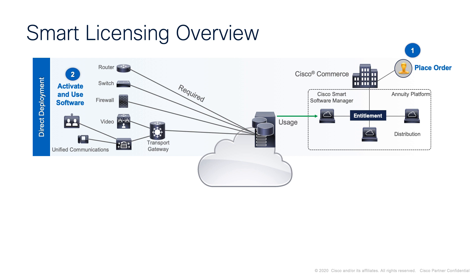Where direct communication from each device is not possible or not preferred, the second option is to transfer files directly over the internet to the cloud through an HTTPS proxy. Either you can use the Cisco Smart Call Home Transport Gateway or an off-the-shelf proxy such as Apache.